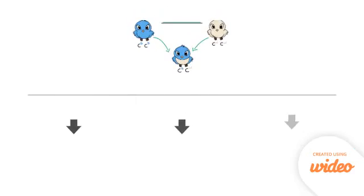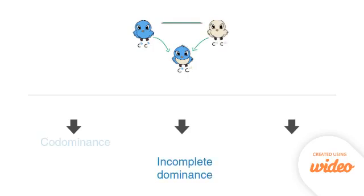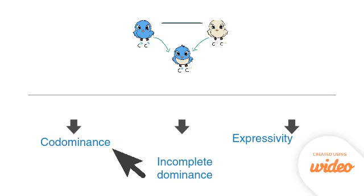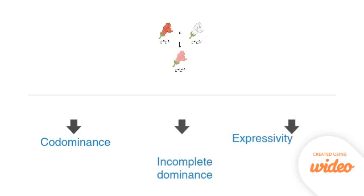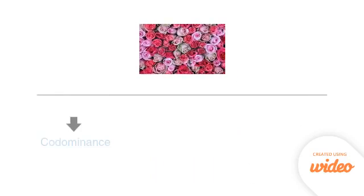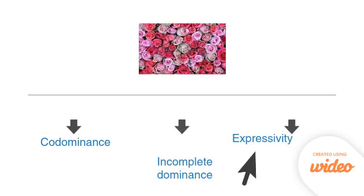Let's go over a few more examples. Is this incomplete dominance, codominance, or expressivity? If you said codominance, you're right, because both colors are expressed. What about this one? We can see a blend, so we know it's incomplete dominance. And this one? If you said expressivity, you're right. All the flowers express a pink color, but the shades of pink vary.